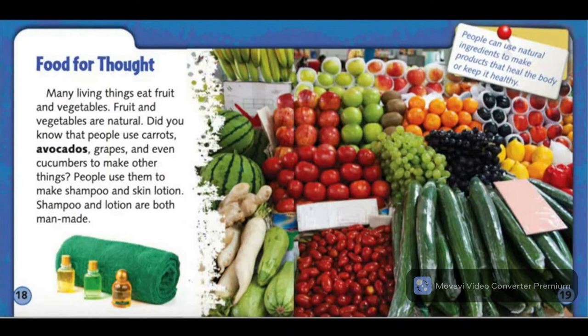Many living things eat fruit and vegetables. Fruit and vegetables are natural. Did you know that people use carrots, avocados, grapes, and even cucumbers to make other things? People use them to make shampoo and skin lotion. Shampoo and lotion are both man-made.